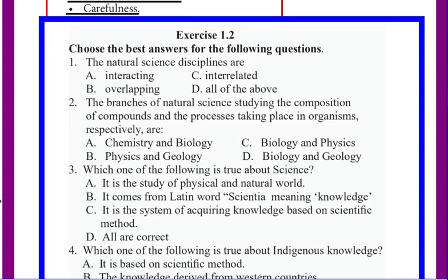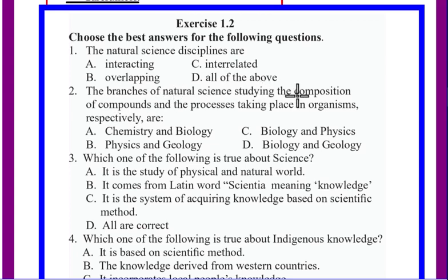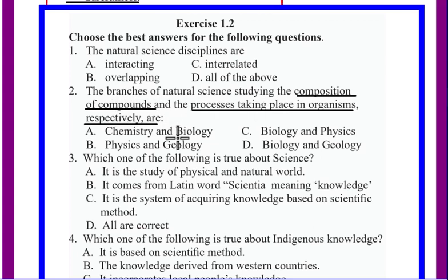In exercise 1.2, natural science disciplines are interacting, interrelated, and overlapping with each other. The branch of natural science studying the composition of compounds is chemistry. The process taking place in living organisms is studied in biology.